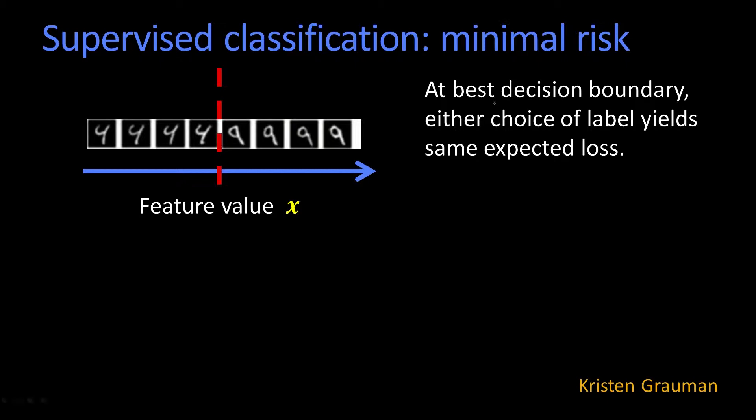At the best decision boundary, and that's what's indicated in red here, at that boundary, if I call it a four or I call it a nine, it should cost me on average the same.